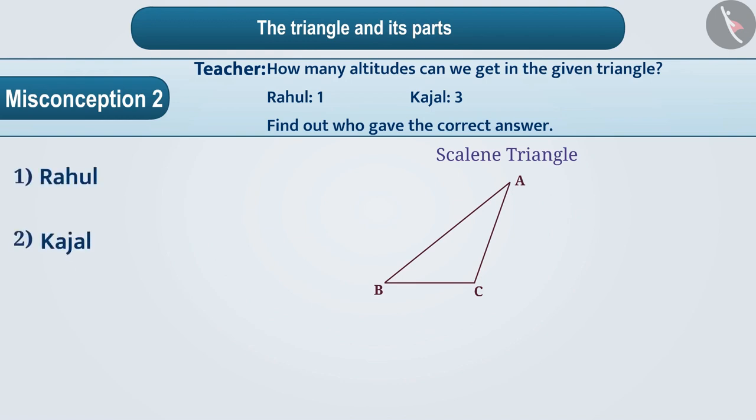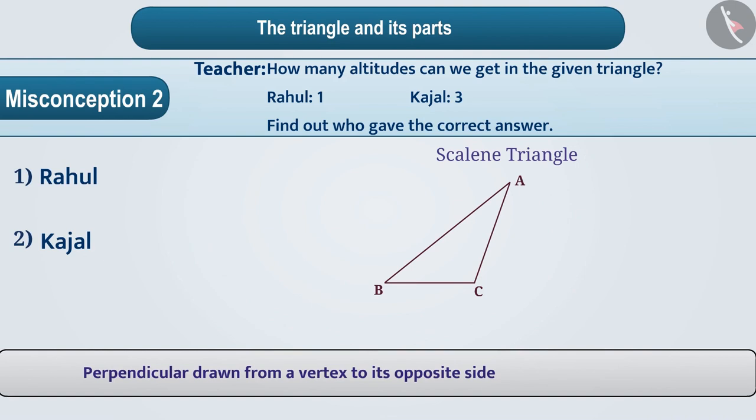Some children are well aware that the perpendicular, which is formed on the opposite side of any vertex, is called the altitude of the triangle. In the given figure, some children are only able to make an altitude on the side BA only from the vertex C.